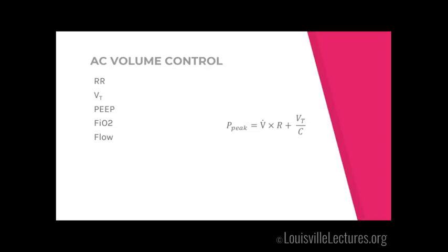Going to volume control — probably 99% of patients in the MICU will be on volume control. This differs by unit; people use different modes in different places. The MICU data supports volume control, though it's mixed data. Two variables that control CO2 in this mode: respiratory rate and tidal volume (VT). The variables controlling oxygen are PEEP and FiO2. Flow we won't worry about — that's a fellow-level thing.